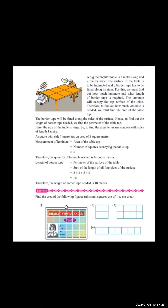When I ask you a question, respond in the chat box. Now I'm going to expand the formula. A square with side one meter has an area of one square meter. So the formula is: to find the measurement of laminate, you want to count the area of the table top — how many squares occupy the table top? Tell me, how many squares are on the table surface.